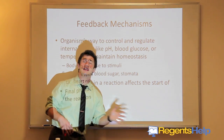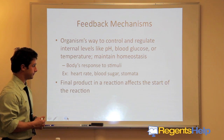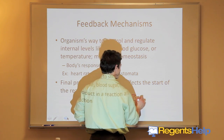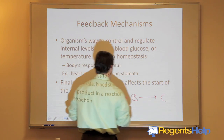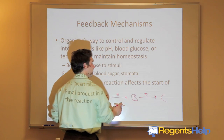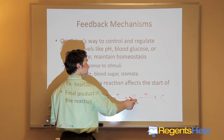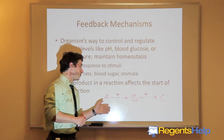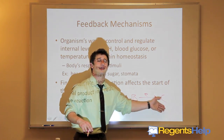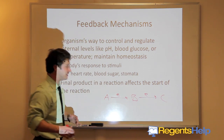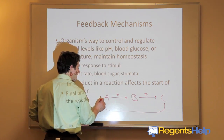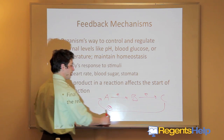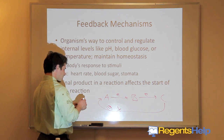The final product in a reaction or process will affect the start. What you might see on the Regents is a diagram: molecule A being converted to B, being converted to C using enzymes. The objective of the process is to make C. Once C is made, the final product goes back to the beginning and turns the process off — that's what the negative sign means.